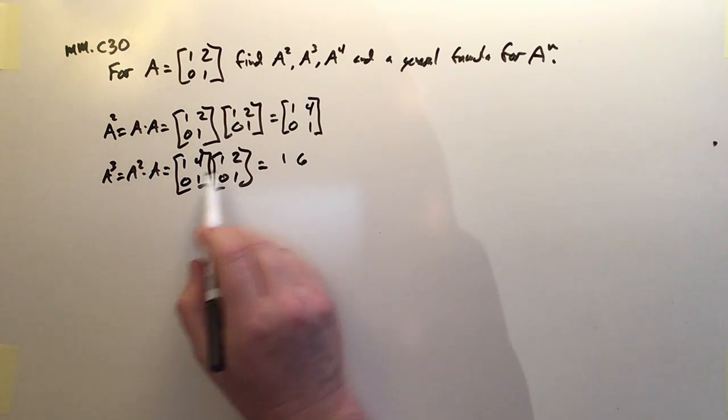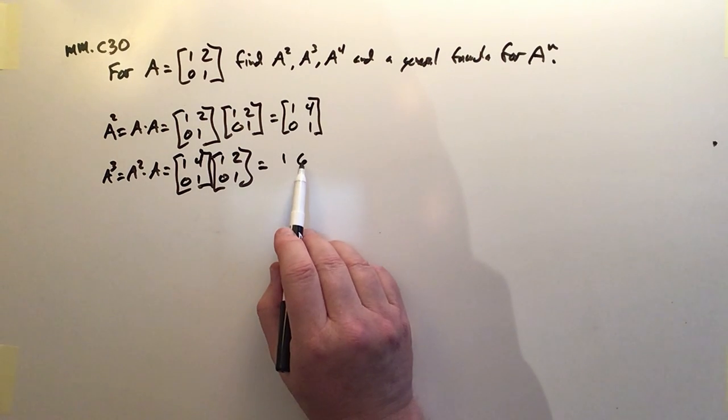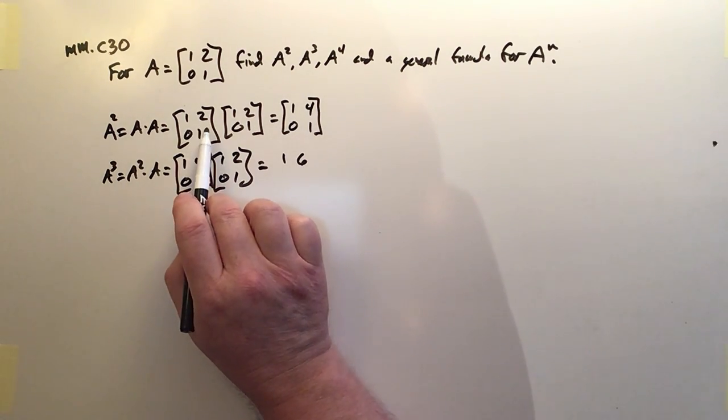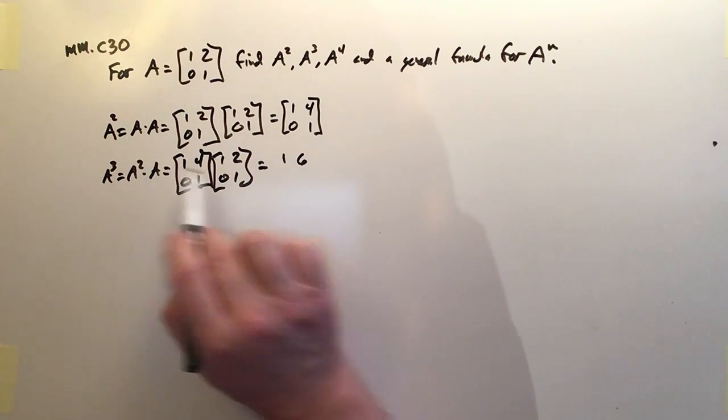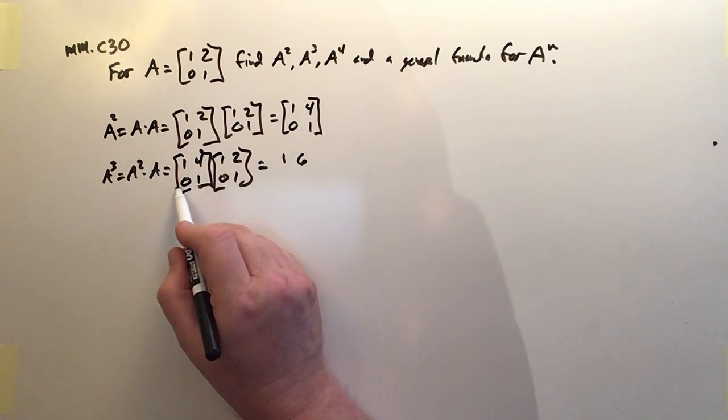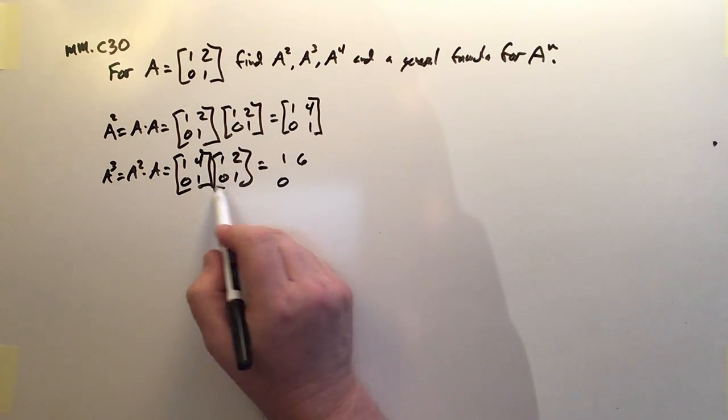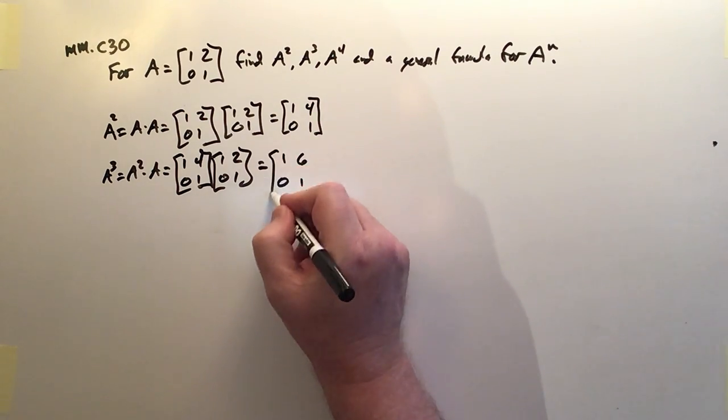And that already breaks my pattern. A cubed gives me a 6 for this element. So it's certainly not 2 cubed, which we thought might be the pattern. So that breaks it. And then the bottom row is 0, 1 times 1, 0. That's 0. And 0, 1 times 2, 1 is 1. So there it is.